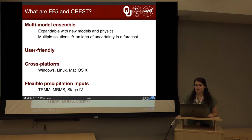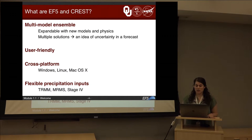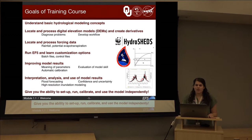EF5 is user-friendly — it lets you know if there are errors in your code and tells you which line and what is wrong with it. It's also cross-platform: you can use it with Windows, Linux, and Mac, though for this advanced training we will be using Windows. It also has flexible precipitation inputs; you can use TRMM, MRMS, and Stage 4.